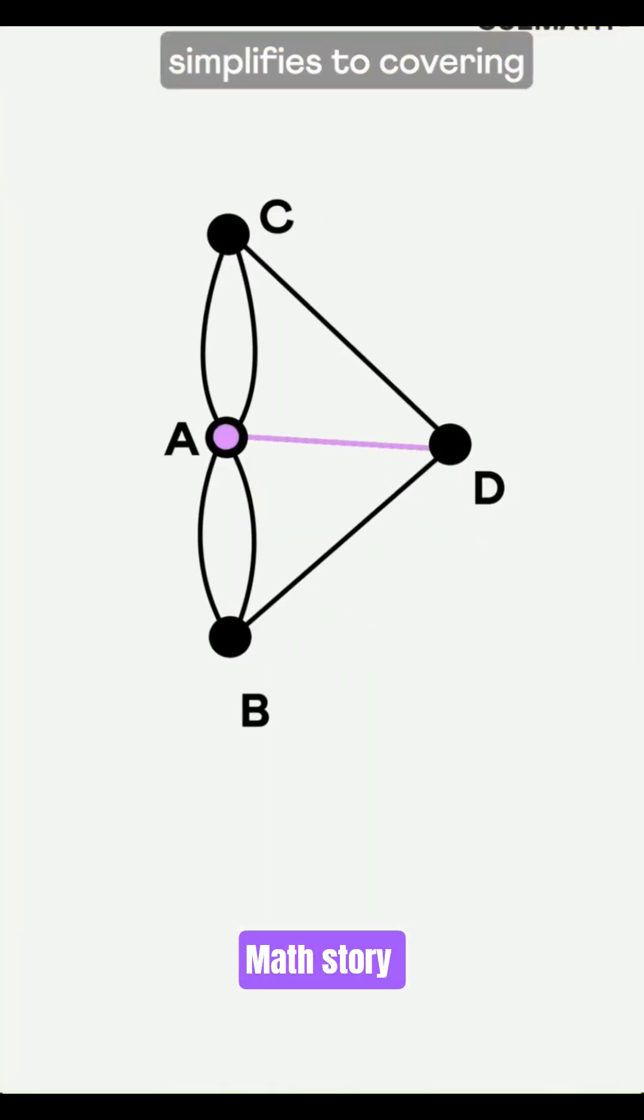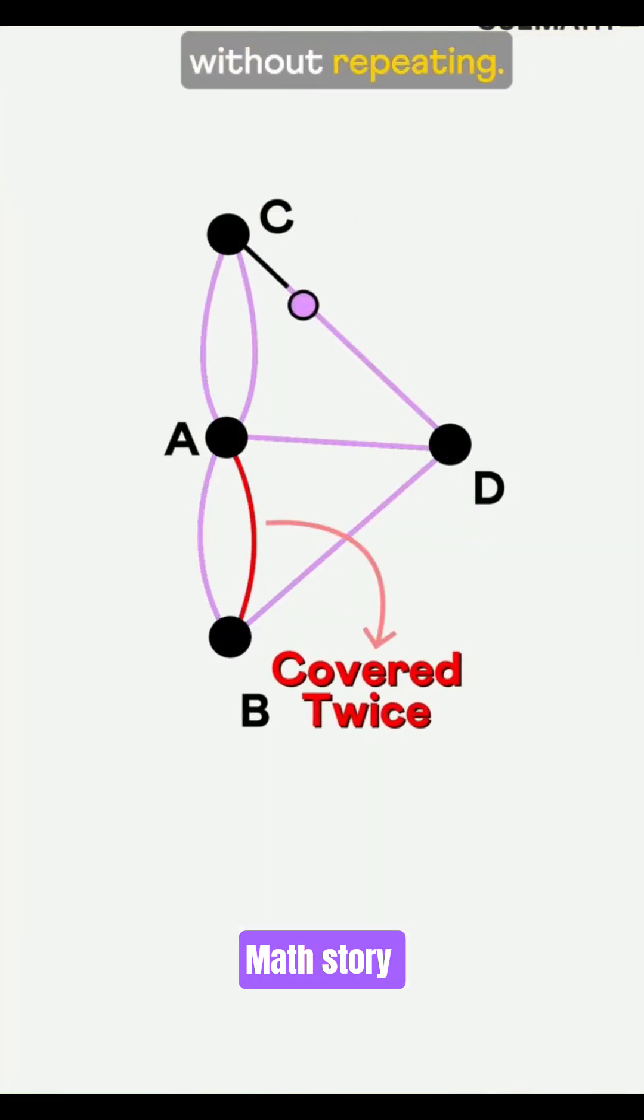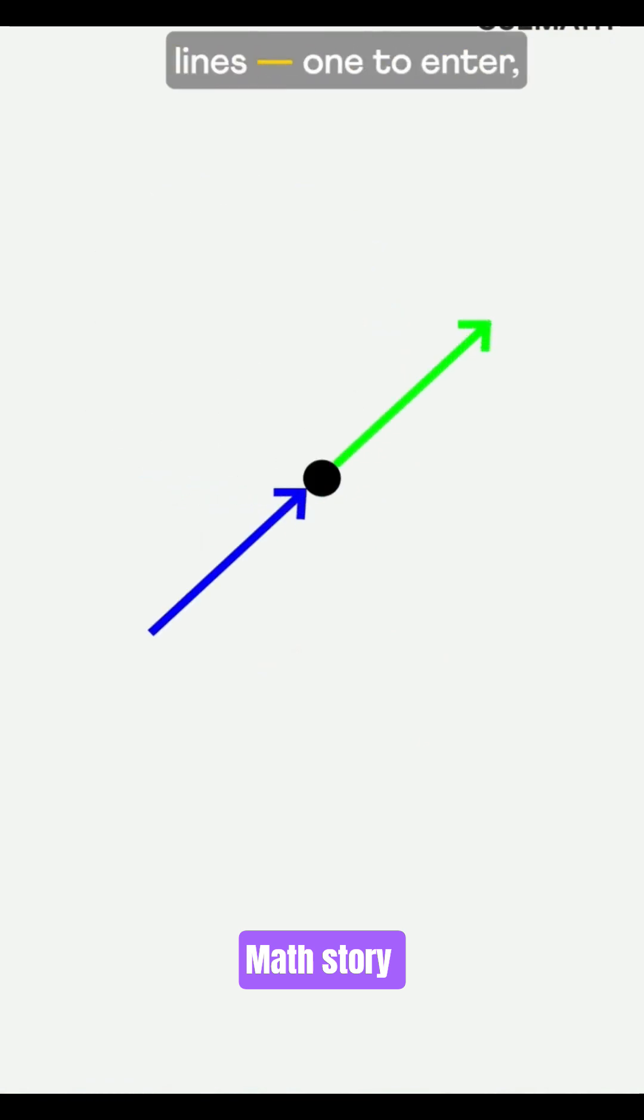The problem now simplifies to covering all the lines once without repeating. Euler realized each point needs two lines, one to enter, one to leave. So each point must have an even number of connections.